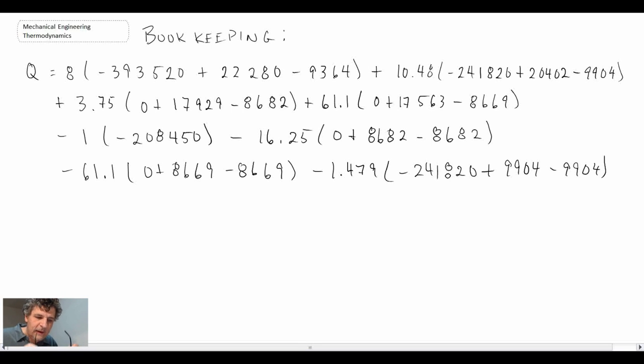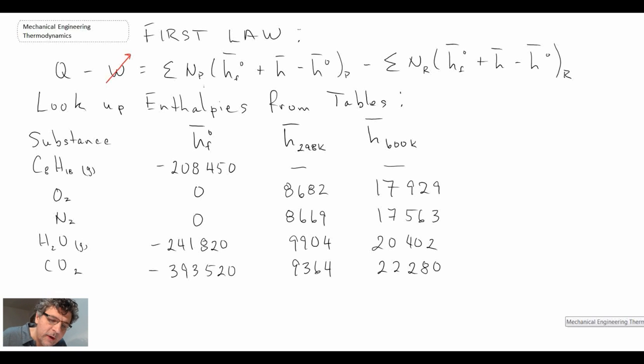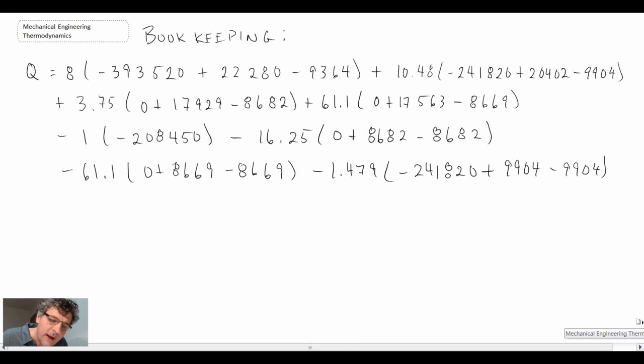So that's the bookkeeping that we have. If you look back at our first law, what we're doing is starting with the products and then we go on to the reactants. So the products in this equation are here, here, here, and here. And then when we're subtracting, those are the reactants. And you'll notice the reactants were 25 degrees C.